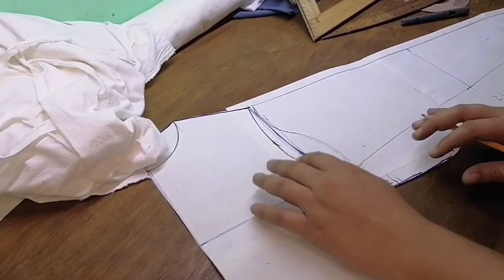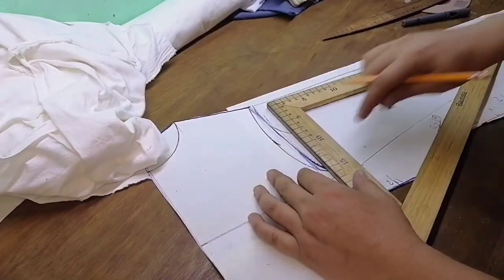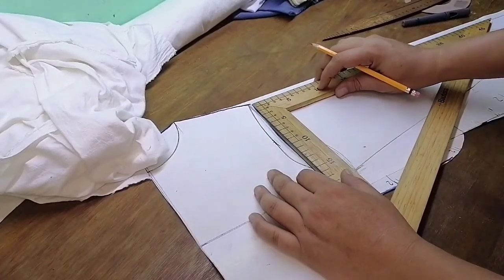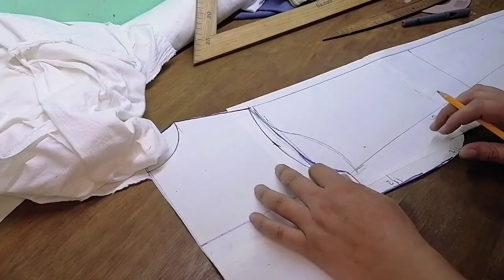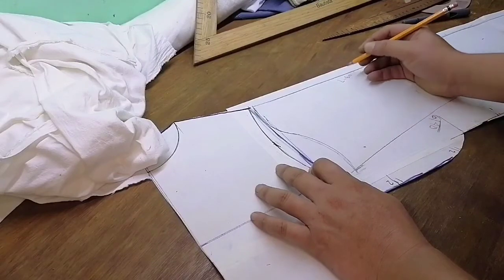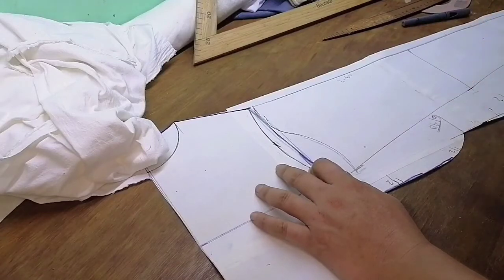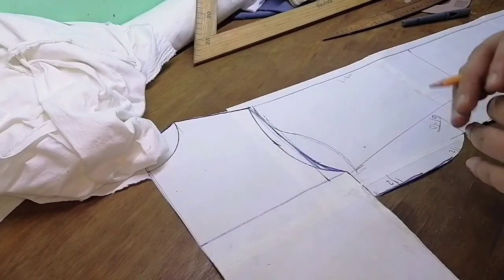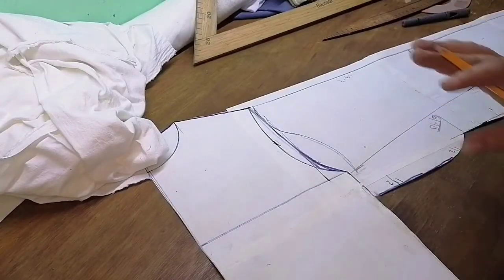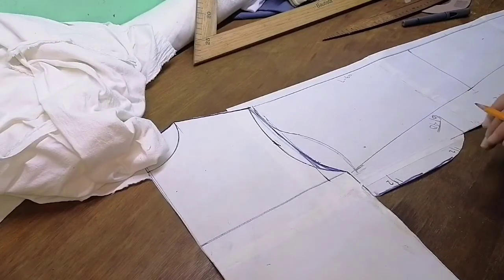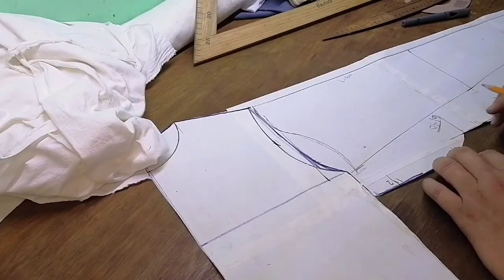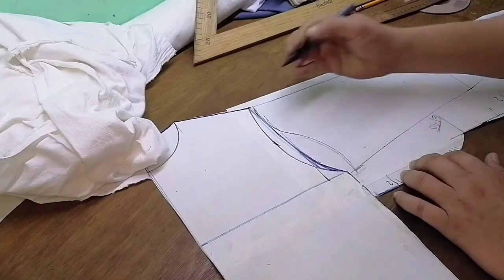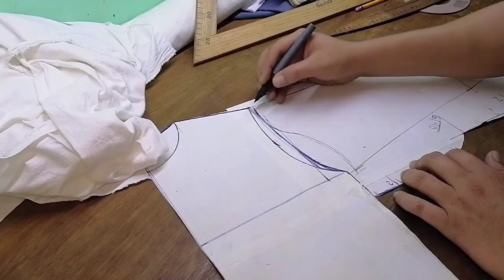Para el proceso de la manga, súper fácil, súper rápido. Vamos primero a escuadrar sobre la línea de la sisa. Tiene que estar aquí bien alineado y vamos a marcar una línea. Esta línea que está acá va a contener el largo de la manga. En este caso el largo son 60 centímetros. A mí no me gusta descontarle porque ya van a incluir las costuras y muchas veces hacia lo largo no estira tanto como hacia lo ancho. Entonces prefiero dejarle la cantidad real y si queda muy larga pues ya simplemente se recorta. Vamos a marcar ligeramente en esta área una semicurva, aproximadamente unos 6 centímetros.